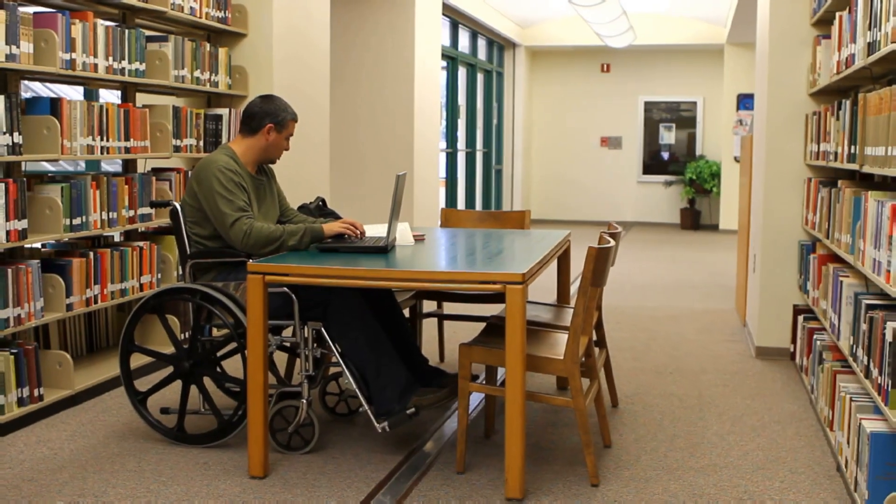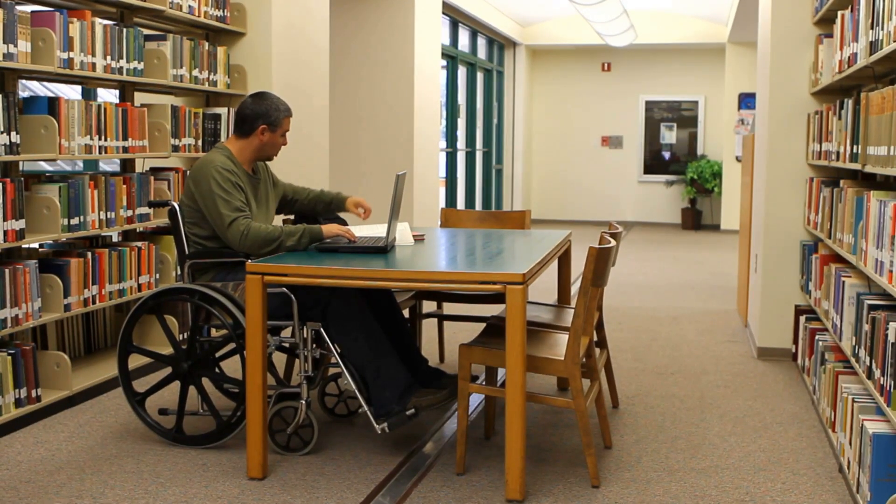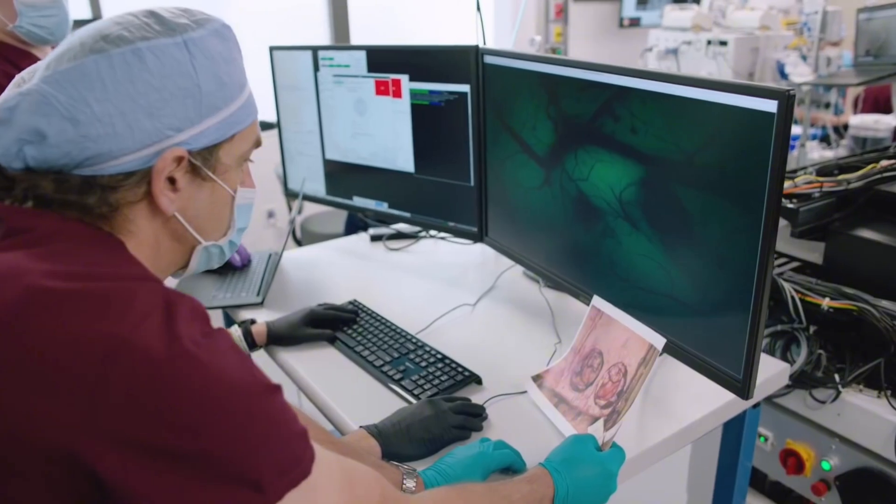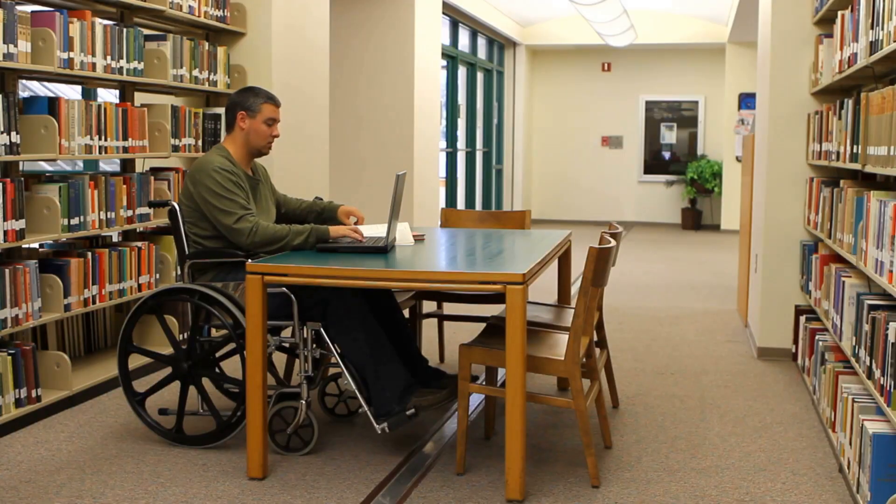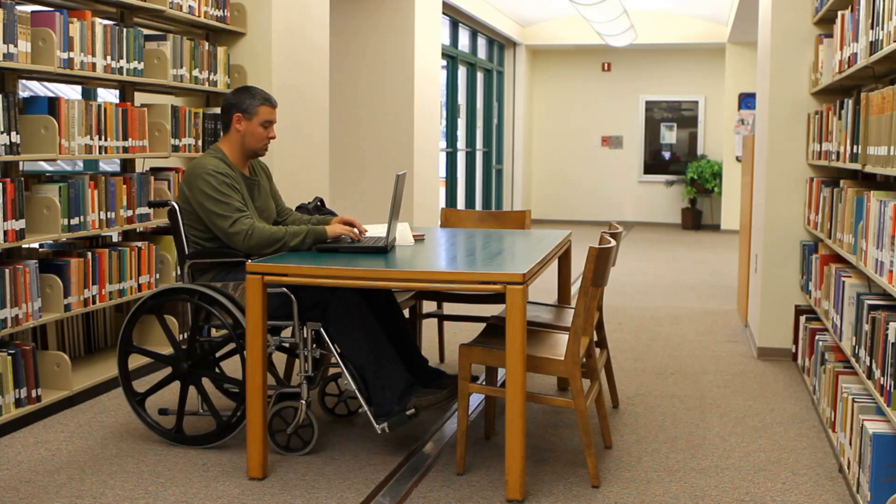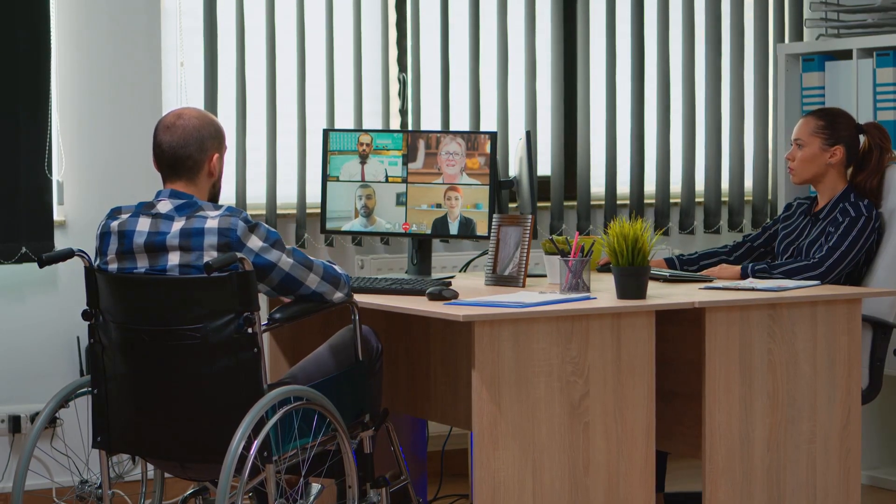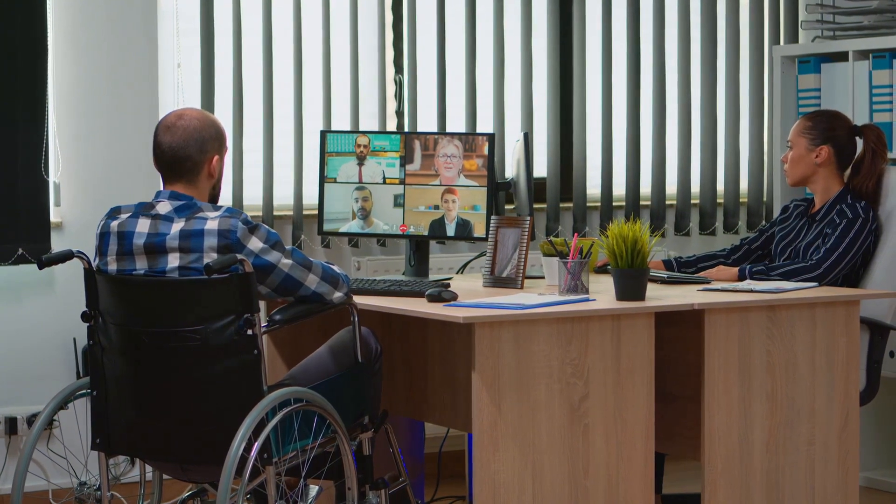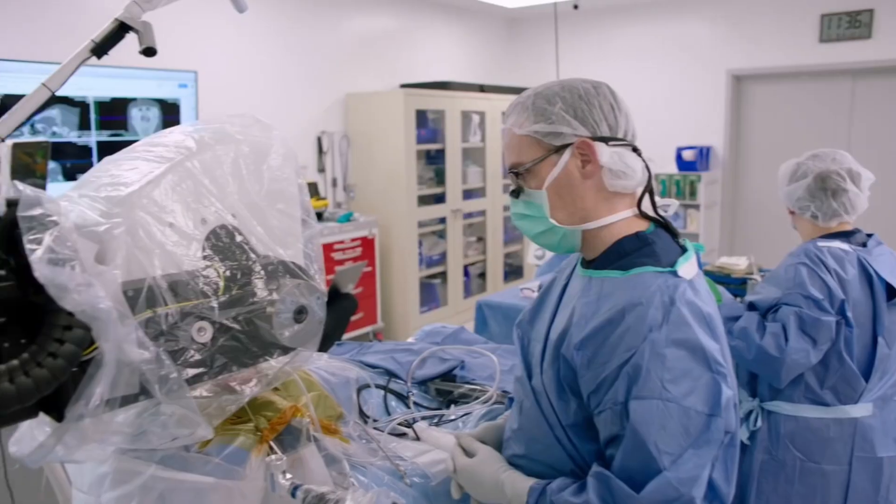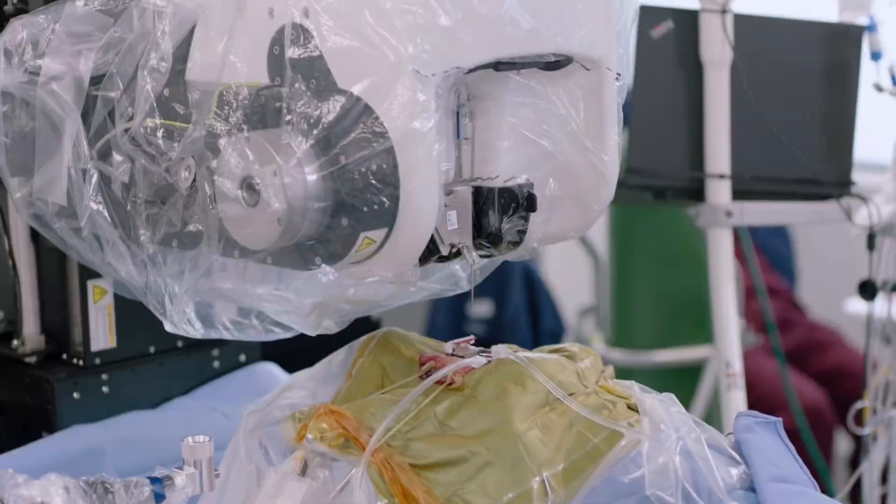Moreover, the implantation location for the Neuralink device is strategically chosen. It is placed over the hand knob area of the premotor cortex, a region of the brain responsible for controlling hand, wrist, and forearm movements. This precise positioning is crucial for enabling effective communication between the BCI and the motor functions associated with limb control.